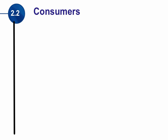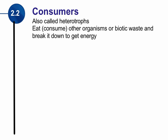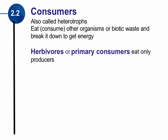A consumer has a more formal term: heterotroph. A heterotroph, or consumer, is anything that eats or consumes an organism, or it might consume biotic waste to get its energy — so anything that eats something else. Think of human beings: we are not capable of producing our own food, so we get our food from other organisms, whether it's plants or animals. That's how we get our energy.